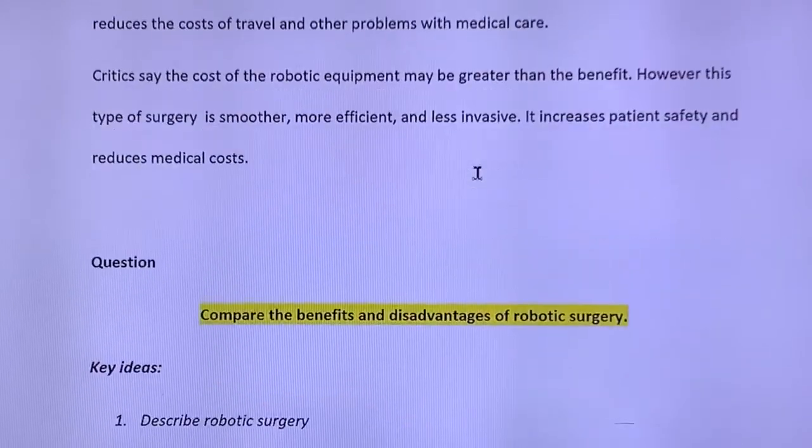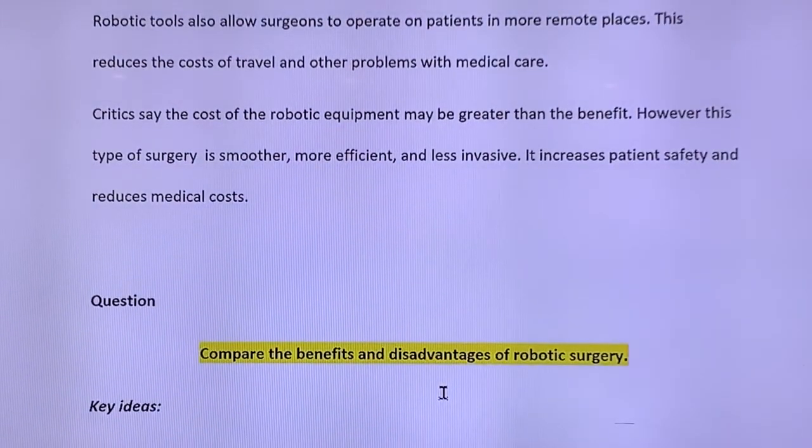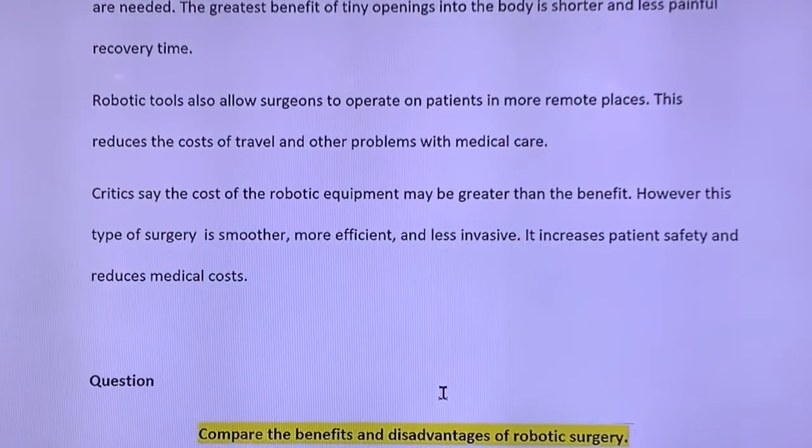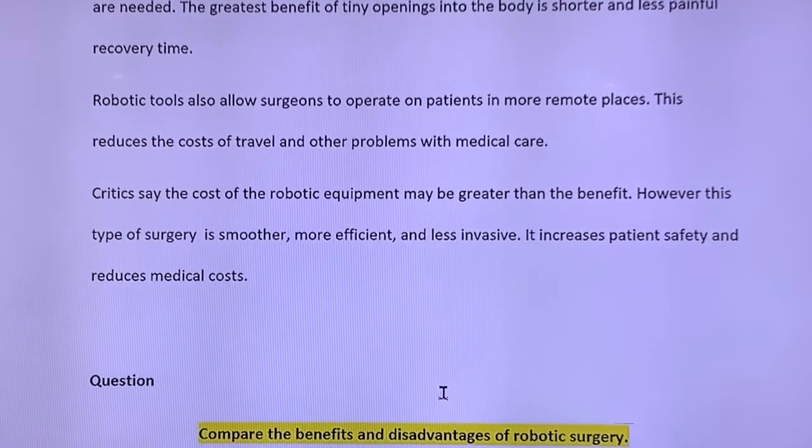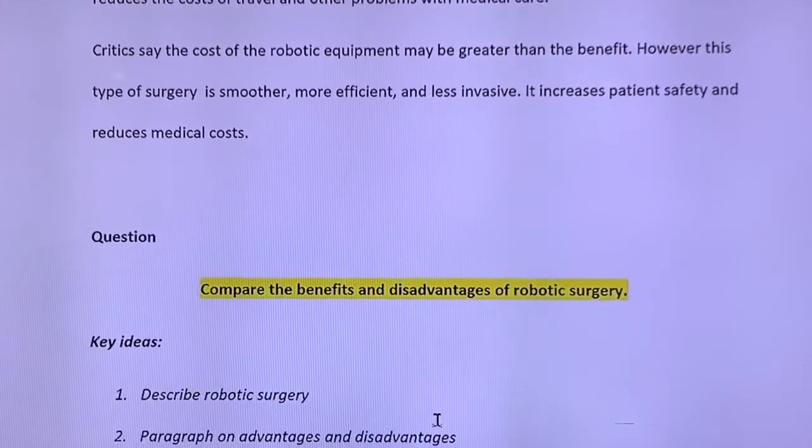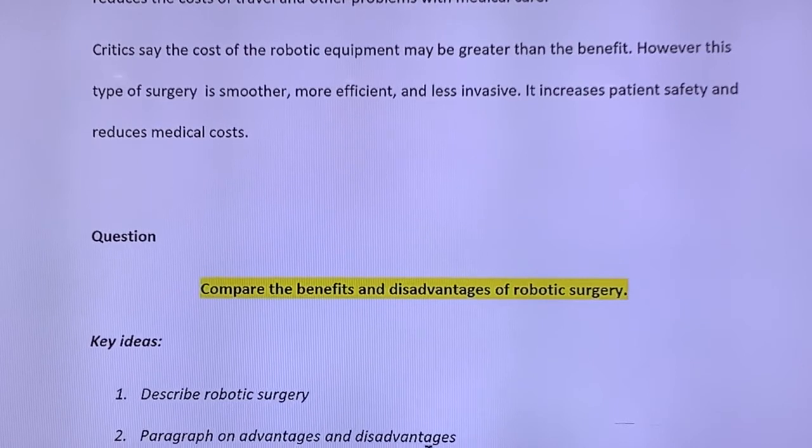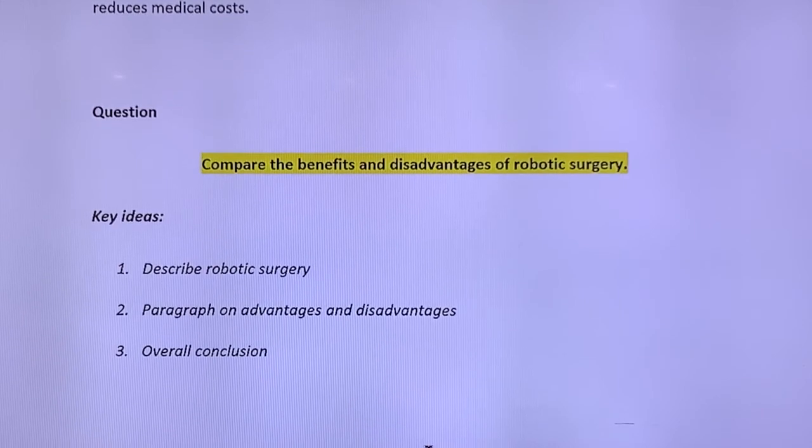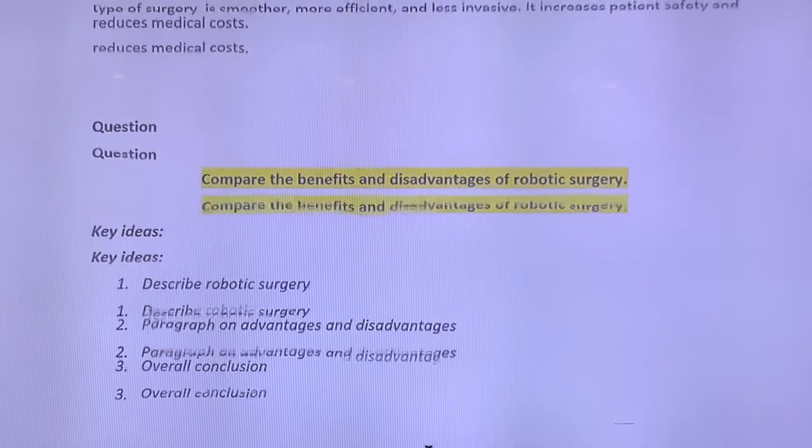So really look at what the question's asking you. This one here is about robot surgeries. And it says here, compare the benefits and disadvantages of robotic surgery. So as I'm reading this article, I've got to be thinking, they want me to talk about what is potentially good, what is potentially bad. So I don't need to do a whole lot until I've read it. But in my mind, I've just got, I'm looking for good and bad. And it says here, the key ideas would be that you could describe robotic surgery, a paragraph on the advantages and disadvantages. And the really important one is to make a conclusion. This is one in science where you can say, this is what you would conclude. It is definitely good or not good in your opinion.